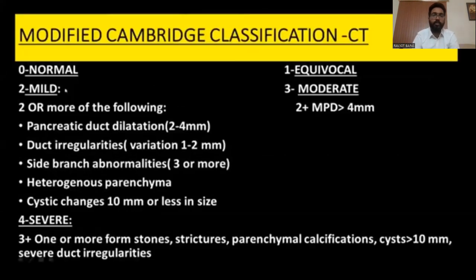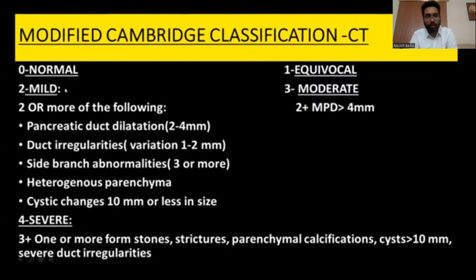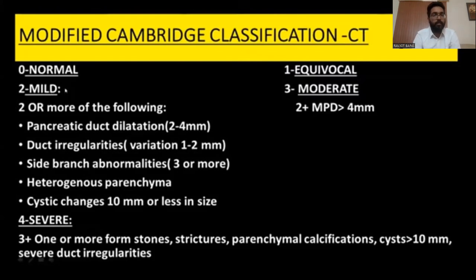The modified Cambridge classification on CT uses a grading system. Grade 0 is normal. Grade 1 is equivocal. Grade 2 is mild, defined by two or more of the following: pancreatic duct dilatation of 2 to 4 mm, duct irregularity variation of 1 to 2 mm, side branch abnormality of 3 or more, heterogeneous parenchyma, and cystic changes of 10 mm or less in size.